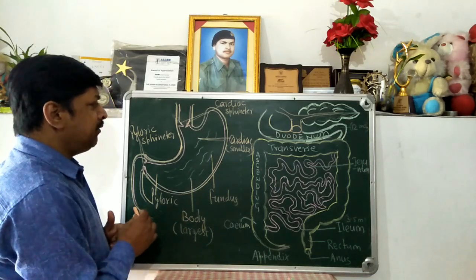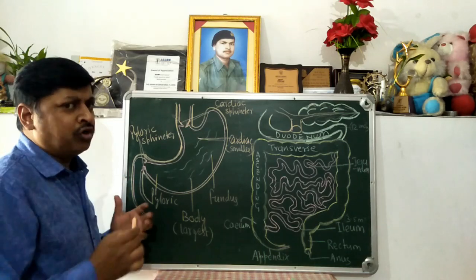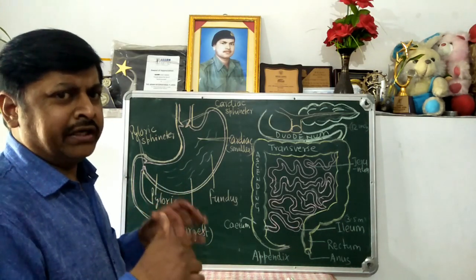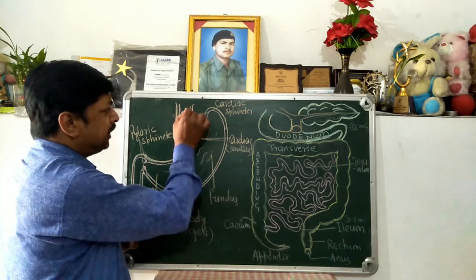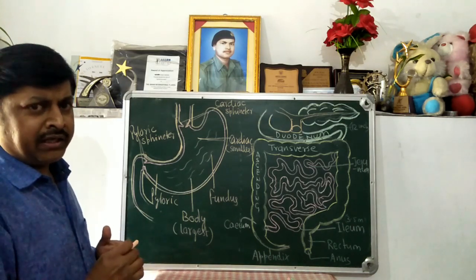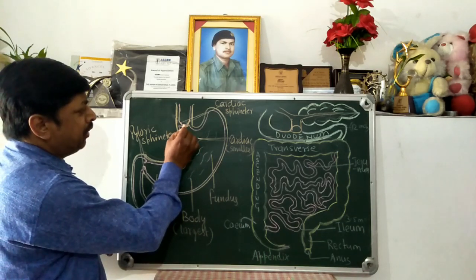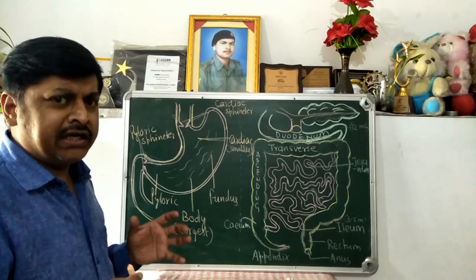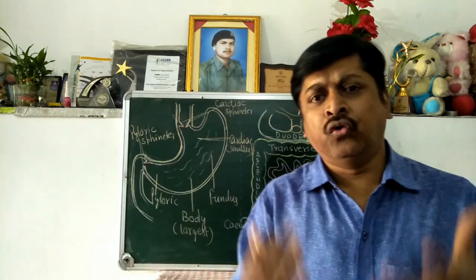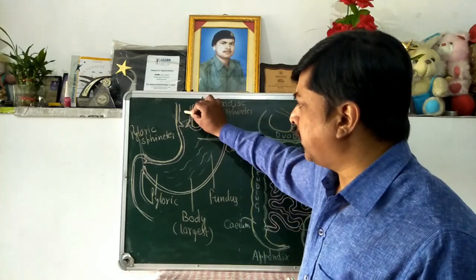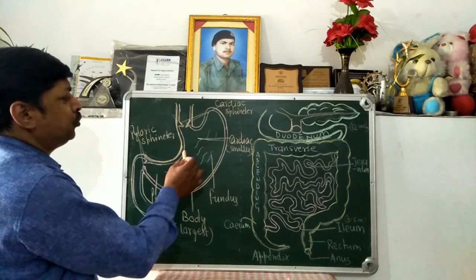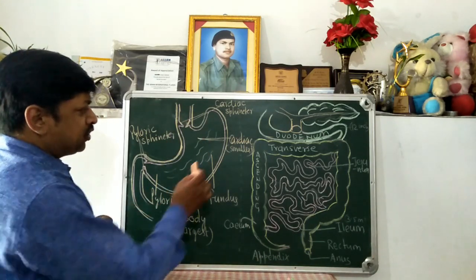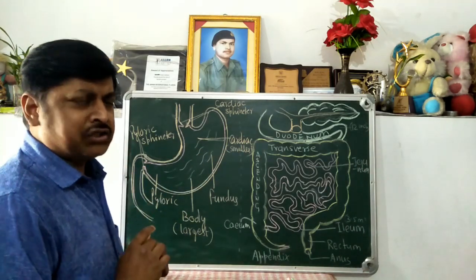The stomach is divided into four parts. The first part is the cardiac stomach, where the esophagus opens into the stomach. The opening is guarded by a valve called the cardiac sphincter, which allows the bolus to pass from the esophagus to the stomach and checks its backward flow. It opens only during vomiting or when a reflex develops; otherwise it never allows food to go back. The cardiac part of the stomach is the smallest part.